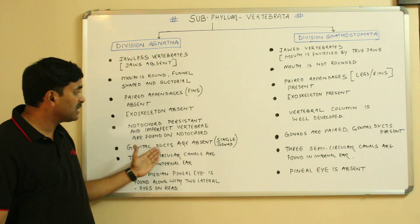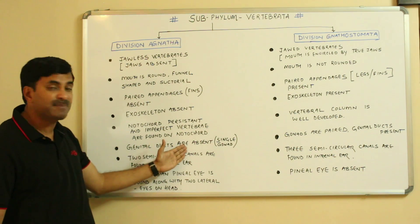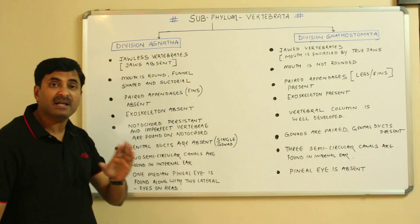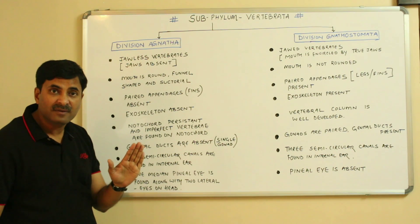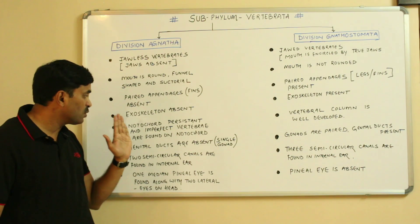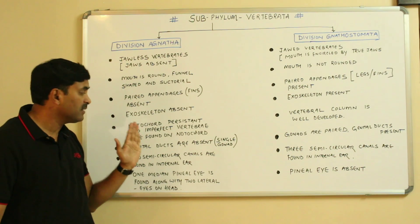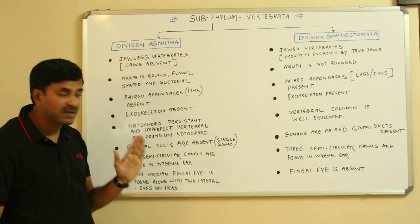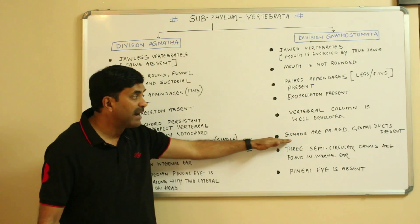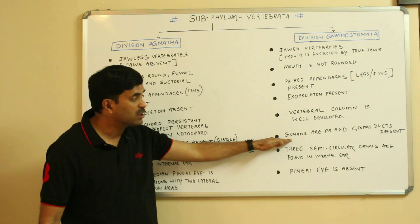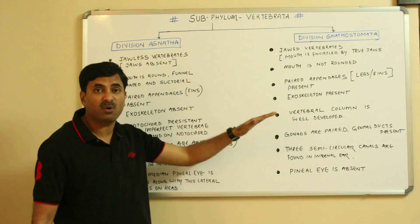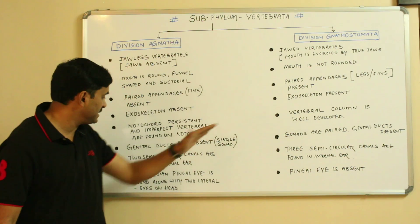Next, genital ducts are absent in Agnatha — they have single gonads and no genital ducts. But in Gnathostomata, the gonads are paired and genital ducts are also present.